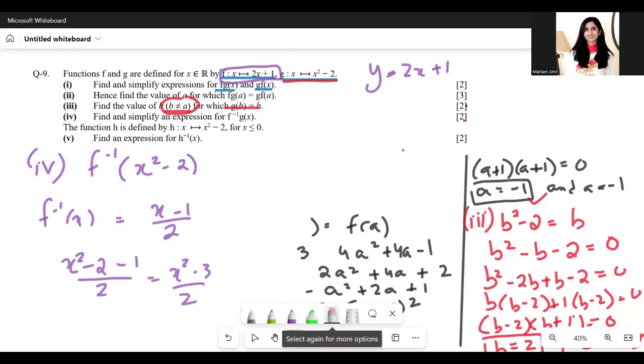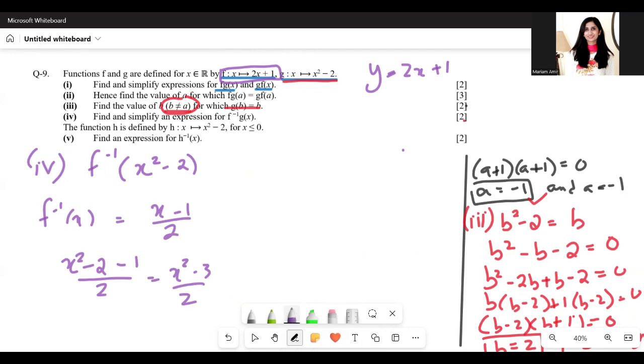Last part is part 5. The function h is defined by h(x) equals x squared minus 2, and its domain is x less than or equal to 0. Find an expression for h inverse of x.